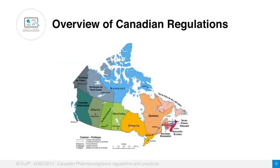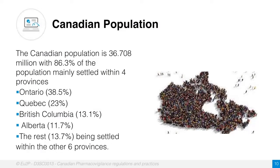Taking an overview of the Canadian regulations: the Canadian population is almost 36 million, with 86% of the population mainly settled within four provinces. There are nine provinces and three territories within Canada. Ontario has the highest population at 38.5%, followed by Quebec, British Columbia, and Alberta. The remaining 13.7% are settled within the other six provinces.